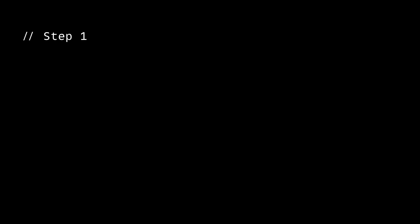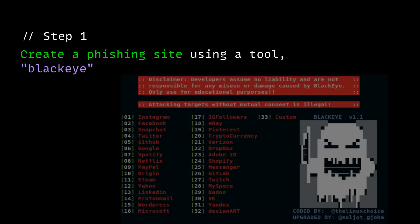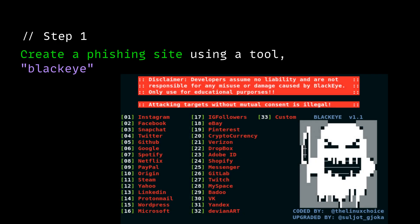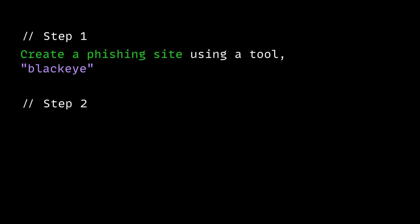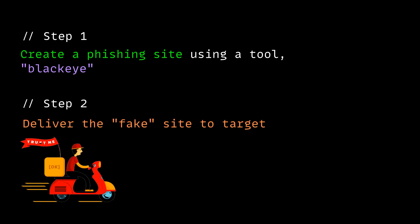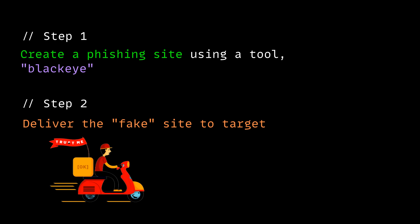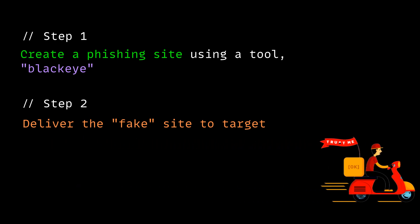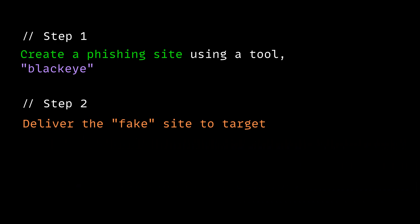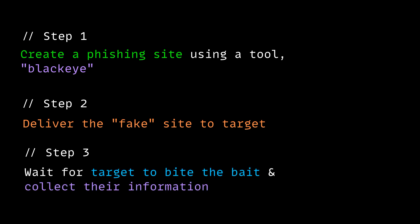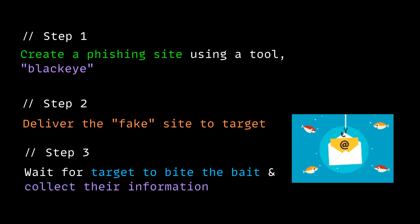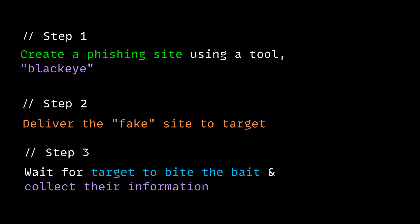So step one: create a phishing site using a popular open source tool for phishing attacks called BlackEye. And step two: deliver that phishing site to our target — in other words, trick our target to come visit our phishing website. And finally step three: we wait for the target to bite the bait and collect all kinds of compromising information from them.